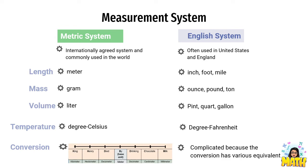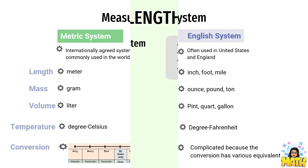For this video lesson, we're going to focus on the English system, which is often used in the United States and England. These are the units we use for length: inch, foot, and mile. For mass, we have ounce, pound, and ton. For volume, pint, quart, and gallon. And for temperature, we have degree Fahrenheit. Conversion of units for this system is a bit complicated because it has various equivalents.